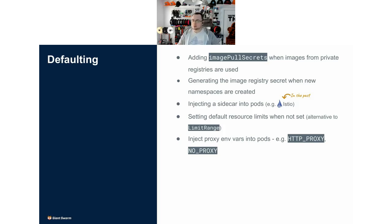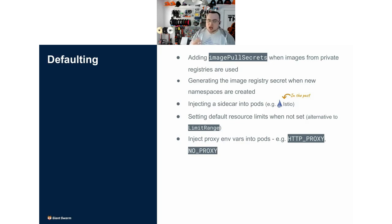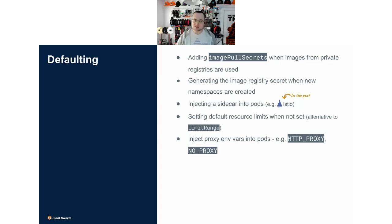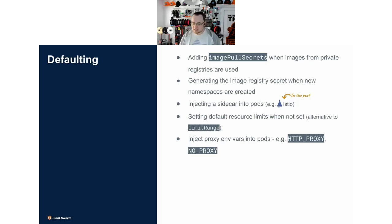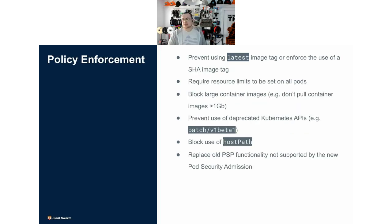Similarly, there's injecting sidecars — Istio popularized this technique, where upon creation of a pod it automatically injects another container alongside the existing containers, enabling the service mesh capabilities. Metrics and logging tools do similar things. There's also proxy environment variables: if a cluster runs in an air-gapped environment or one where networking goes through a proxy, you can automatically inject HTTP_PROXY and NO_PROXY environment variables into every pod so the cluster operator controls those values without coordinating with every developer team.